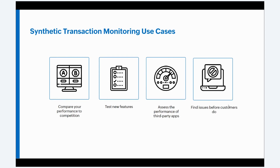Finding issues before customers — synthetic monitoring helps you set up baseline tests to measure the way your customers will interact with your websites. This type of testing can provide direct feedback on performance degradation or availability issues. It will also help your team locate the root cause and engage the right experts to fix the issues before they impact the end users.